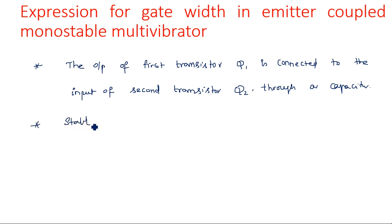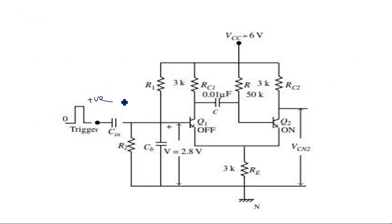The stable state for this monostable multivibrator is: Q1 is in the OFF state and Q2 is in the ON state. When a positive-going triggering pulse is applied at the base of Q1, Q1 comes into the ON state. Then current flows through R, the capacitor, and the associated path.